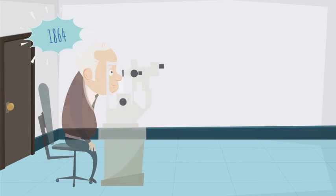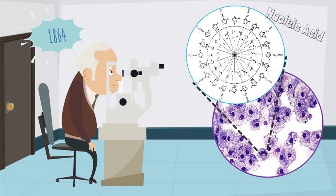Not much was known about genetic material until 1864, when Johann Miescher was the first to isolate nucleic acid. He extracted white blood cell nuclei and found they contained an acidic component and proteins. He called this compound nuclein, which was later called nucleic acid.